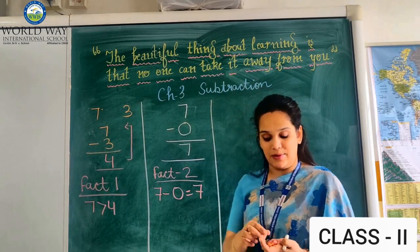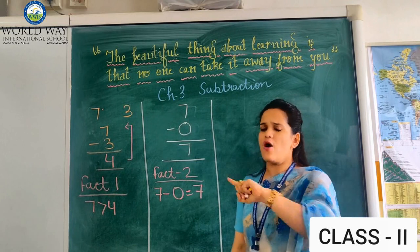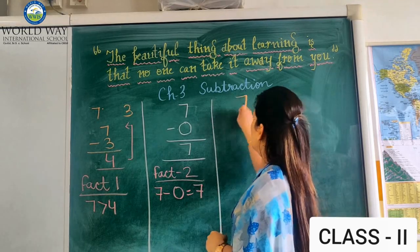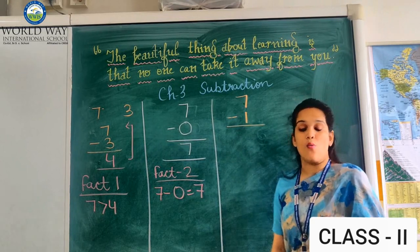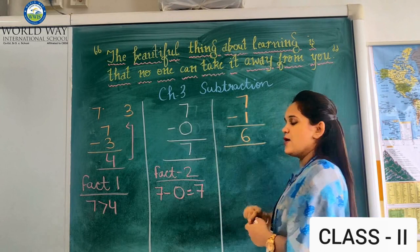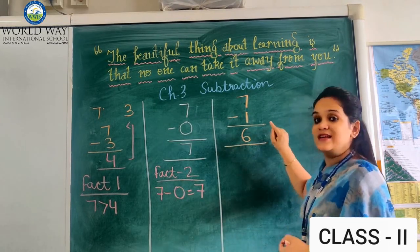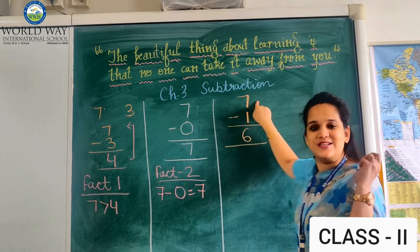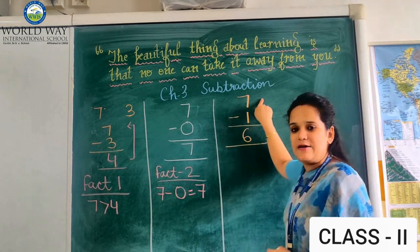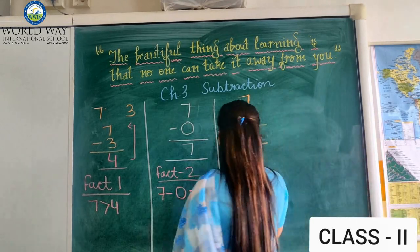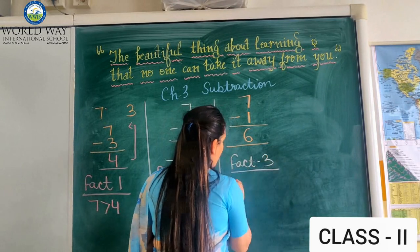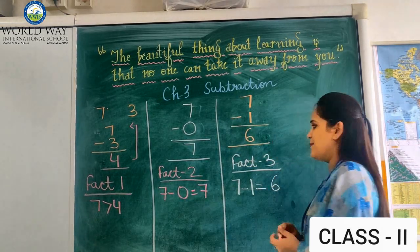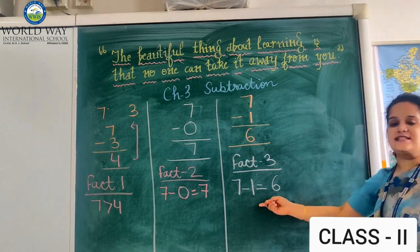Now our fact number 3: if you will remove 1 from any number — suppose you remove 1 from 7 — what will be the answer? The difference will be 6. That means the difference is always the predecessor of the bigger number. So this is our fact number 3: if you remove 1 from any number, you will get the predecessor of that bigger number.